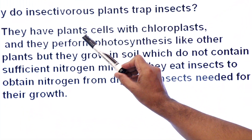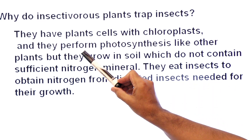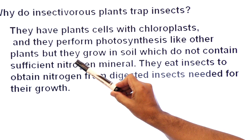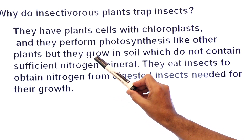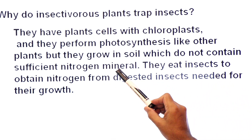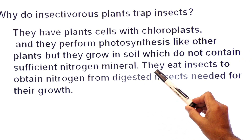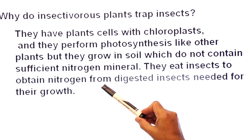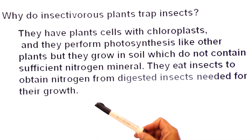These plants have cells with chloroplasts and can perform photosynthesis like other plants. But they grow in soil which does not contain sufficient nitrogen minerals. So they eat insects to obtain nitrogen from digested insects, and that nitrogen is needed for their growth.